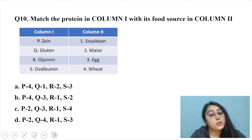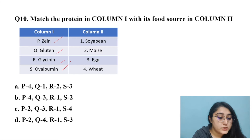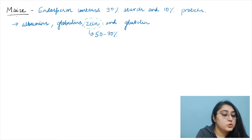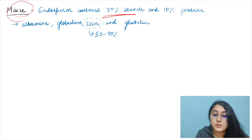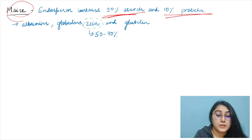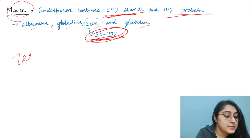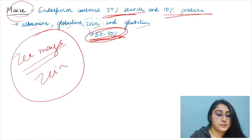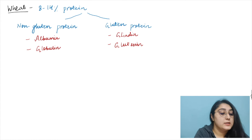Question ten: match proteins in column one with their food source in column two. The proteins are zein, gluten, glycinin, and ovalbumin; the sources are soybean, maize, egg, and meat. Maize endosperm contains about 10% protein, of which zein constitutes 50–70%. The scientific name of maize is Zea mays, and its principal protein is zein — easy to remember.